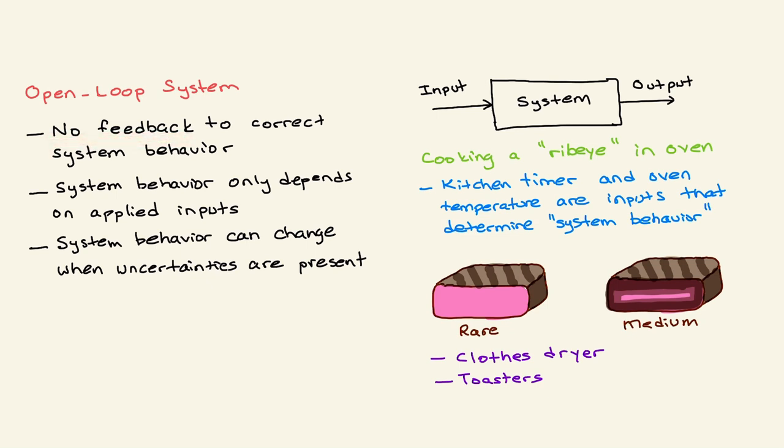In other words, system behavior only depends on applied inputs. In a block diagram, you can represent this as your system, some physical system. You are applying some inputs, it produces some outputs.